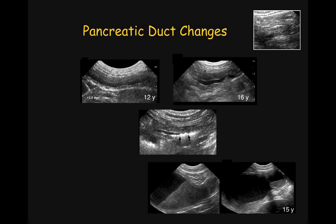Changes in the pancreatic duct in cats are not uncommon. Compared to a normal appearance of the pancreatic duct on the left lobe of a normal cat, we will see a few pancreatic duct changes. They vary from being dilated, like in this 12-year-old cat where the overall diameter is about 2.5 mm, to this 16-year-old cat with a 3 mm wide pancreatic duct with a thickened wall. As we may see in these two cases, the overall diameter of the pancreatic lobe will be affected by this dilation of the pancreatic duct.